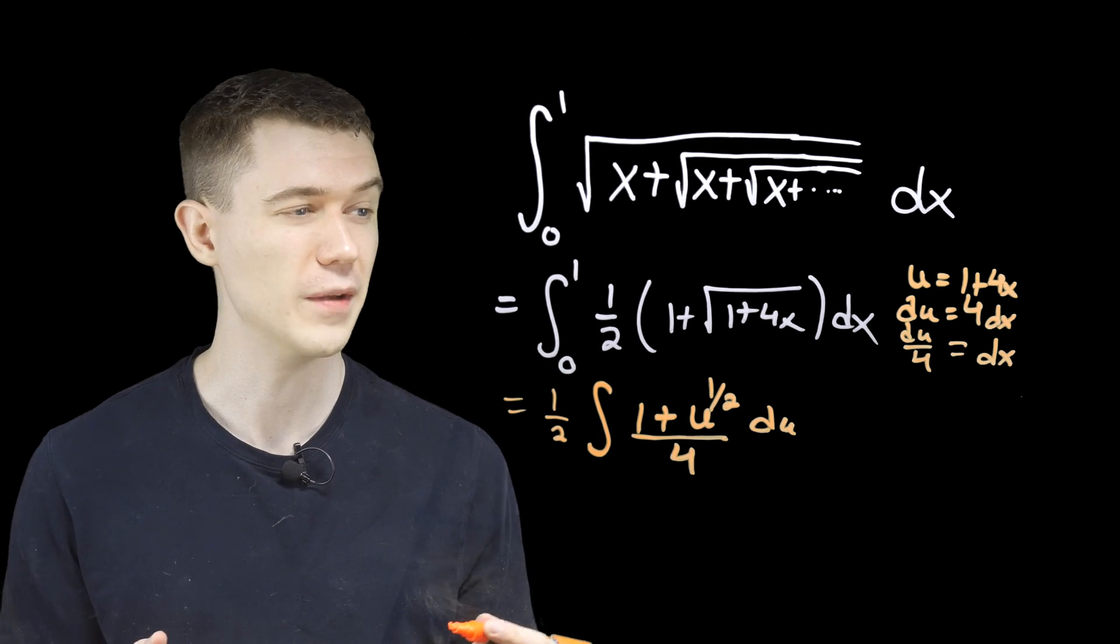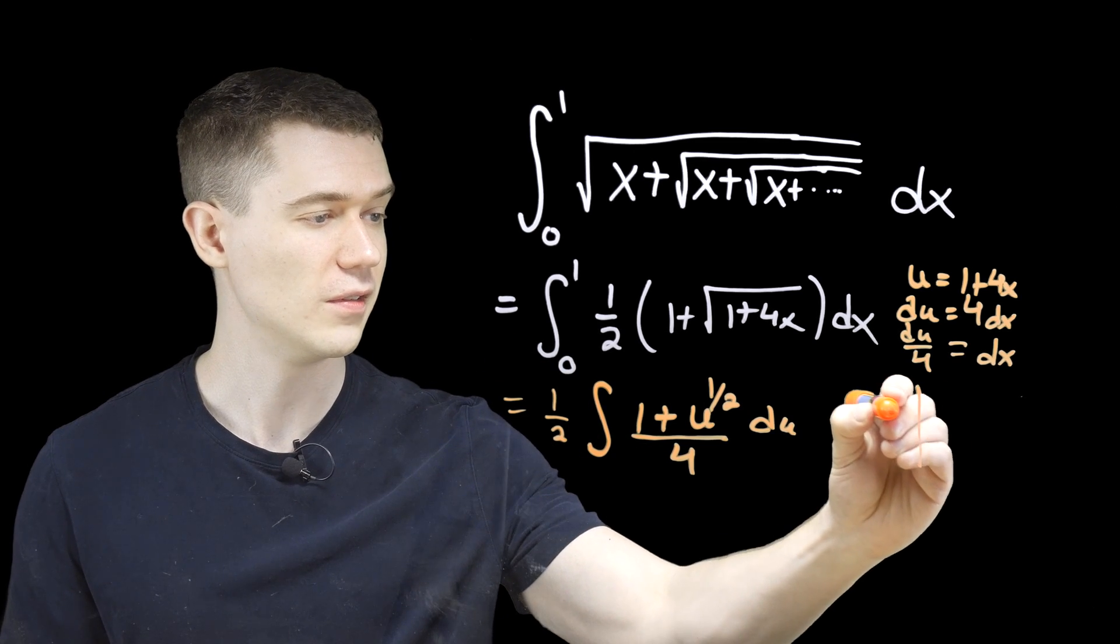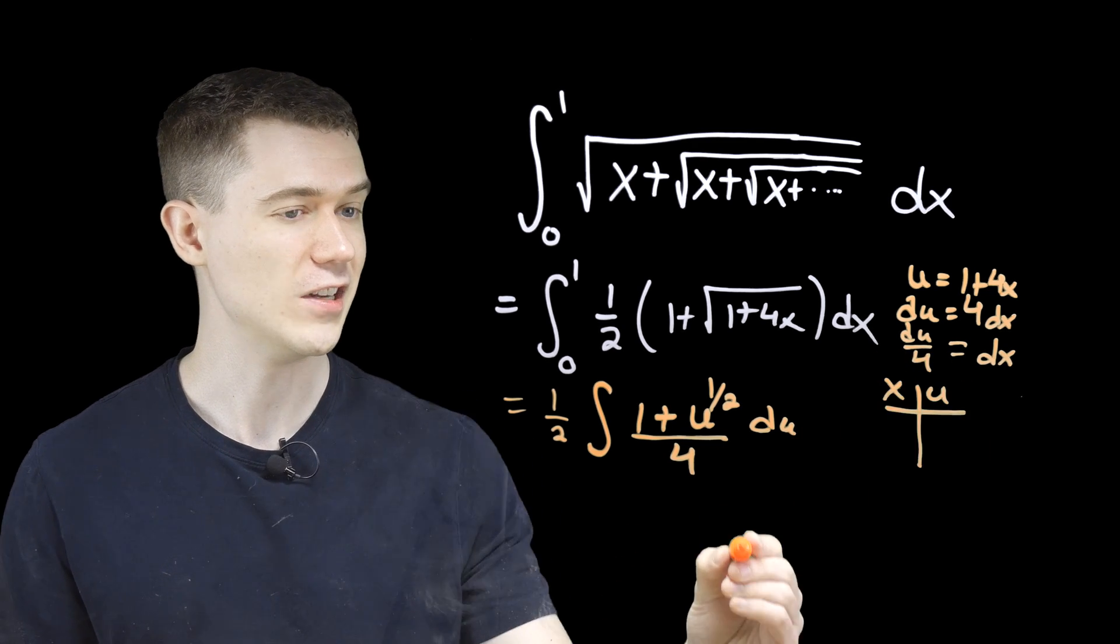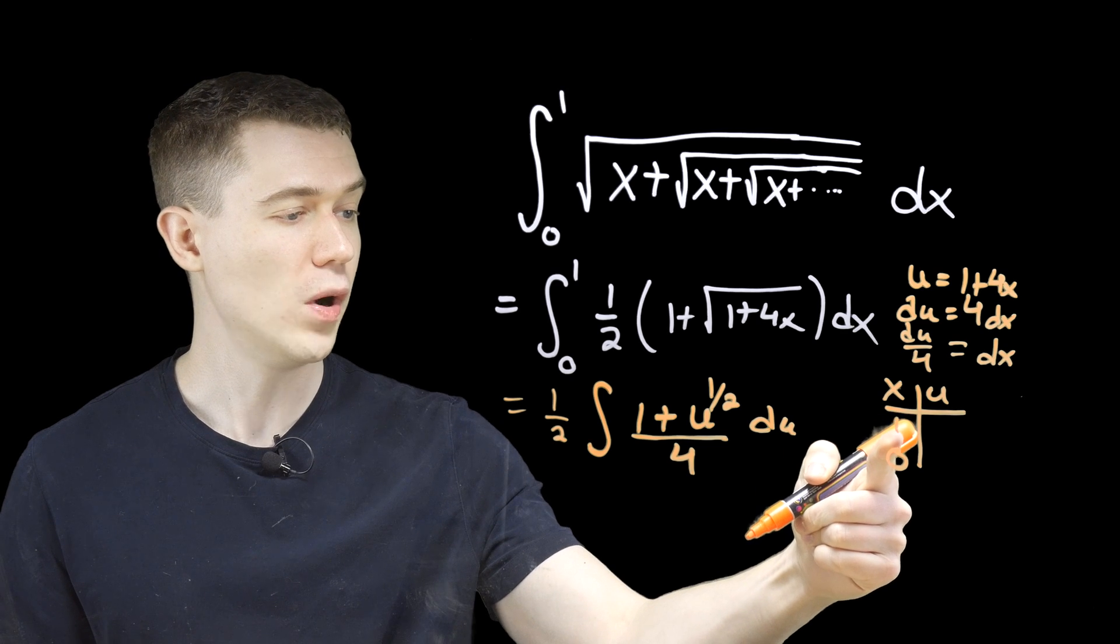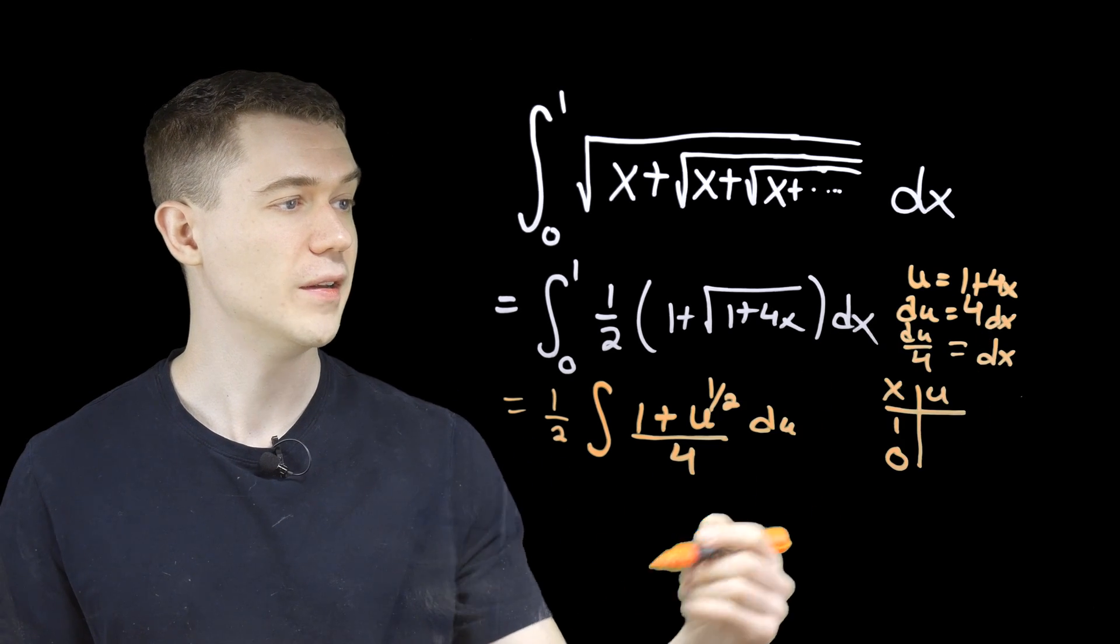These were x limits. We should change them to u limits. So I like to make a little table over here where x's and u's. We had zero and one. And if we plug one into our substitution, that would be